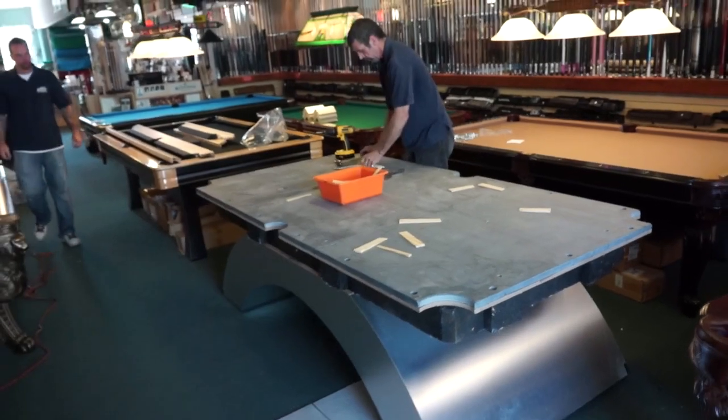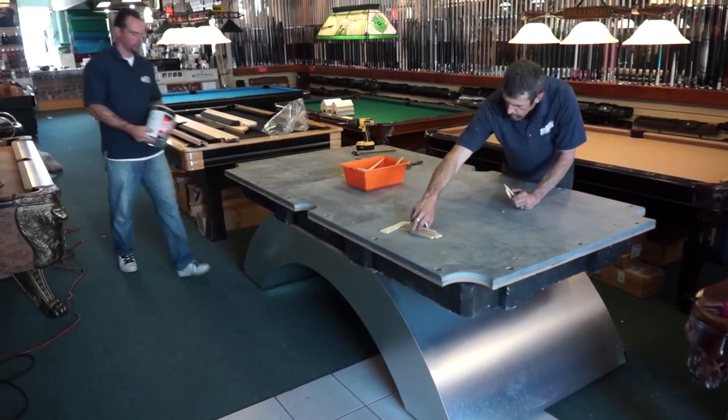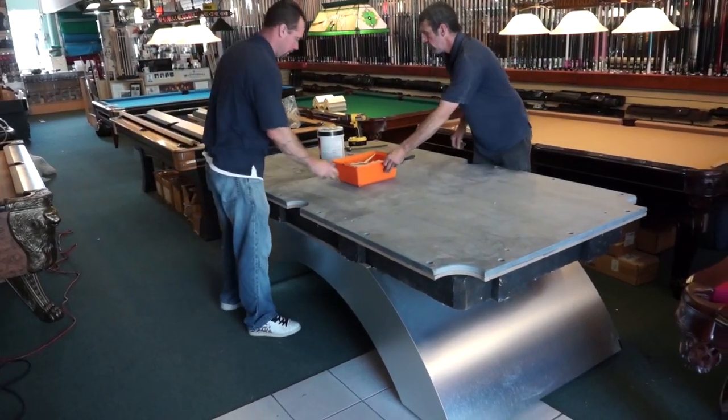Once the slate is perfectly level, it's time to seal the tiny cracks between the three individual pieces, thus making the slate act as a single uniform piece.